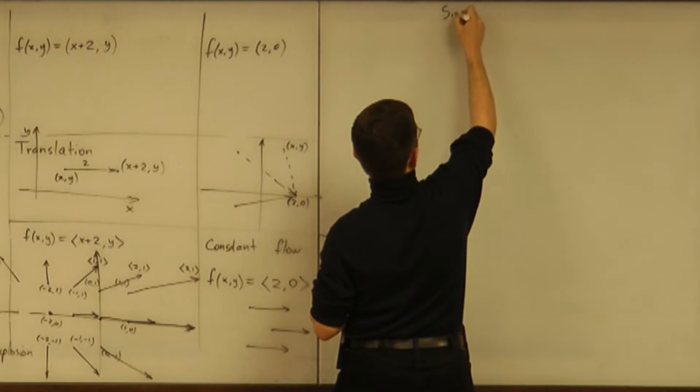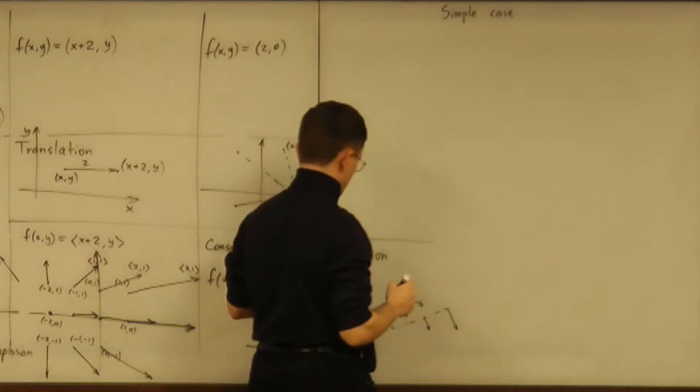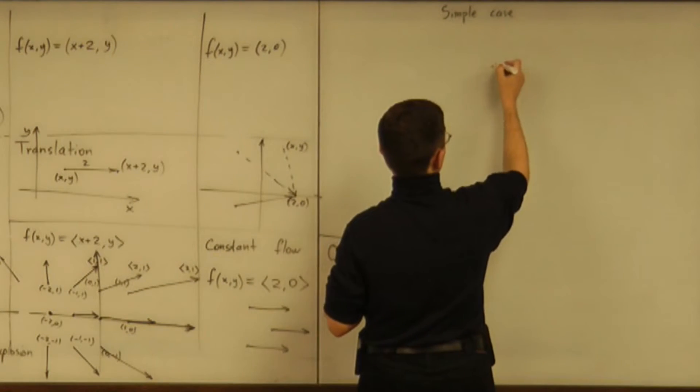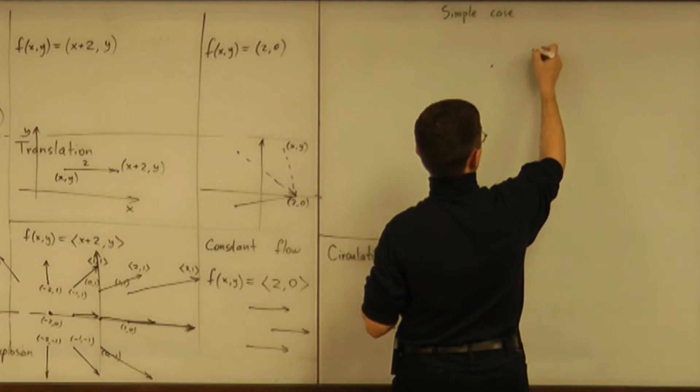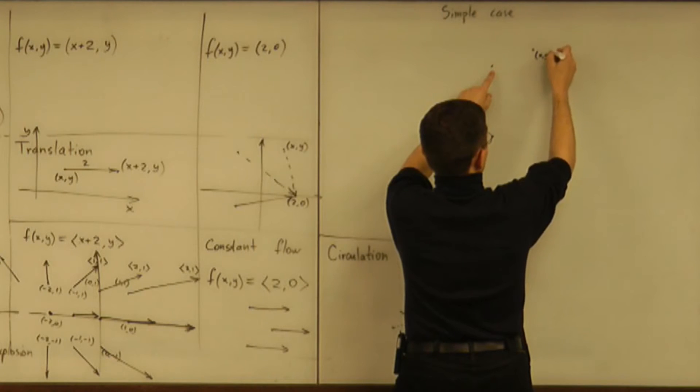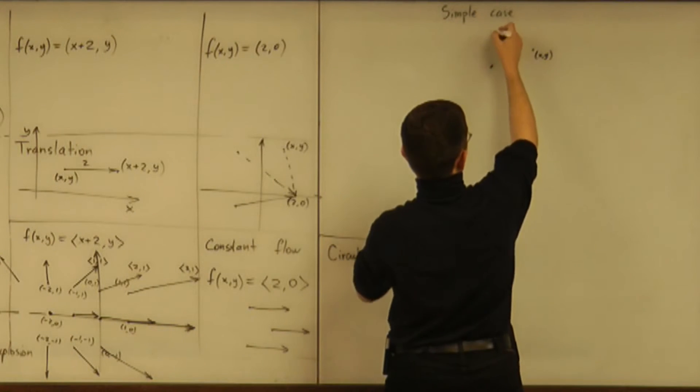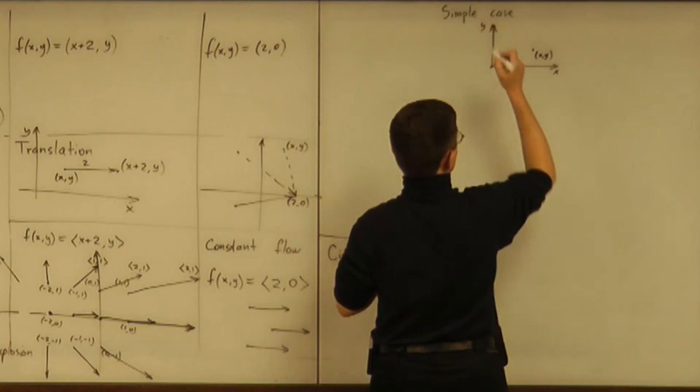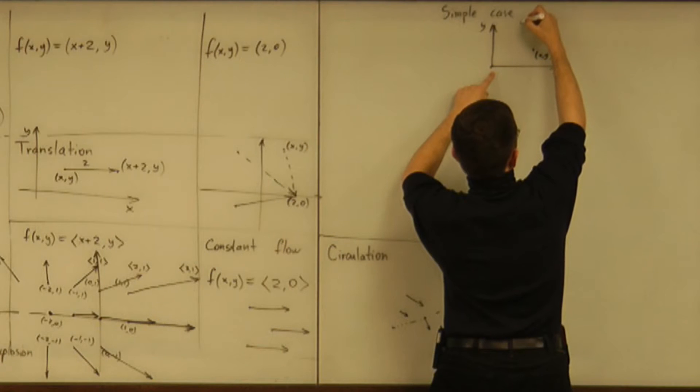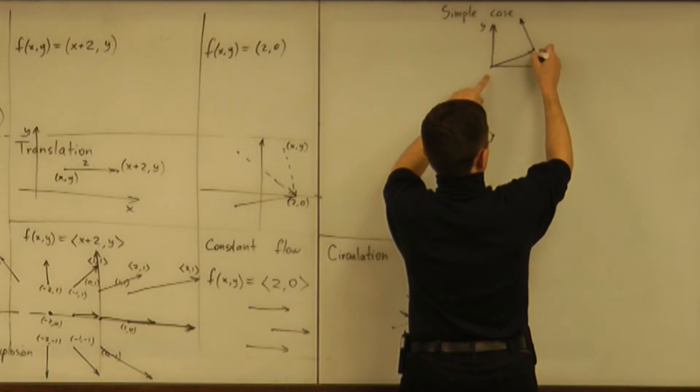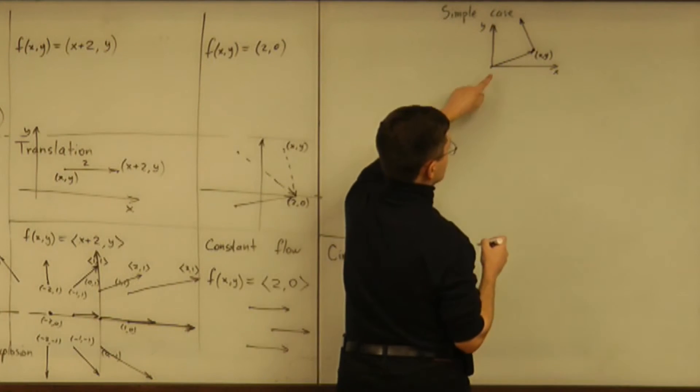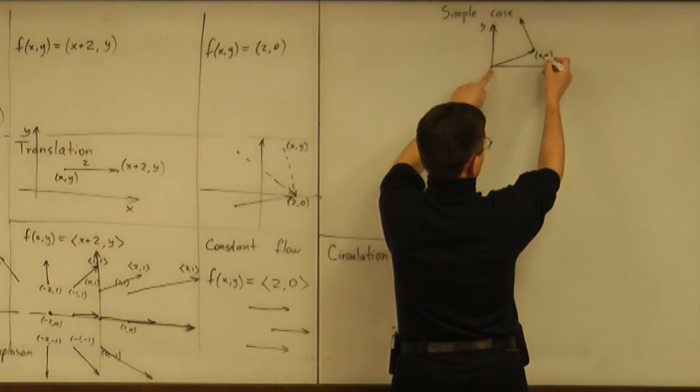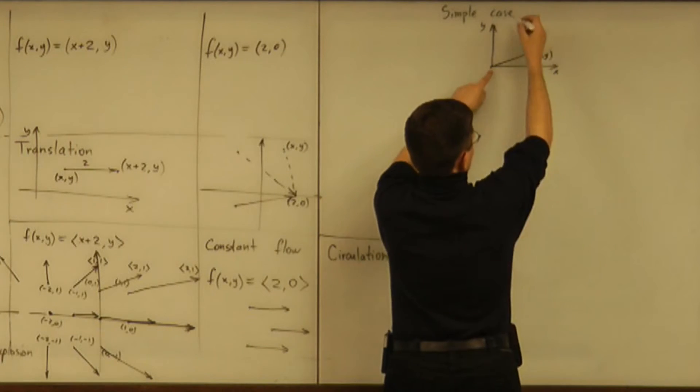So simple case of circulation is going to be when you take a point xy, you assume the coordinate system is centered at the center of circulation. So everything is rotated about the origin of my xy coordinate system. And I will assume the velocity vector assigned has the same magnitude as this position vector.